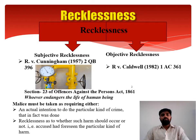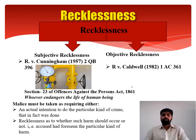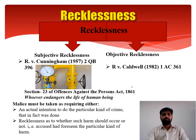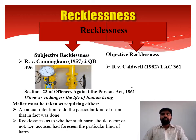In R versus Cunningham, the accused removed a gas pipeline meter in order to steal money inside it. As a result, gas leaked from the pipe and he thereby put the life of another person in danger. He was prosecuted under Section 23 of the Offences Against the Person Act 1861, which states that whoever endangers the life of another human being shall be prosecuted and punished. While prosecuting the accused, the court applied the subjective test of recklessness.